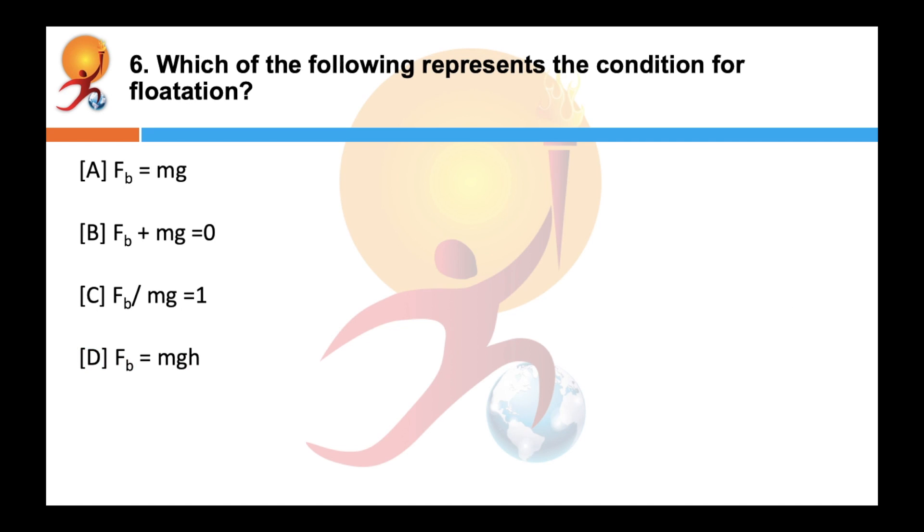Which of the following represents the condition for flotation? Correct answer is A, FB is equal to MG. That is, as per the Archimedes principle, an object will float if the buoyancy force exerted on it by the fluid balances its weight. That is, F is equal to MG.